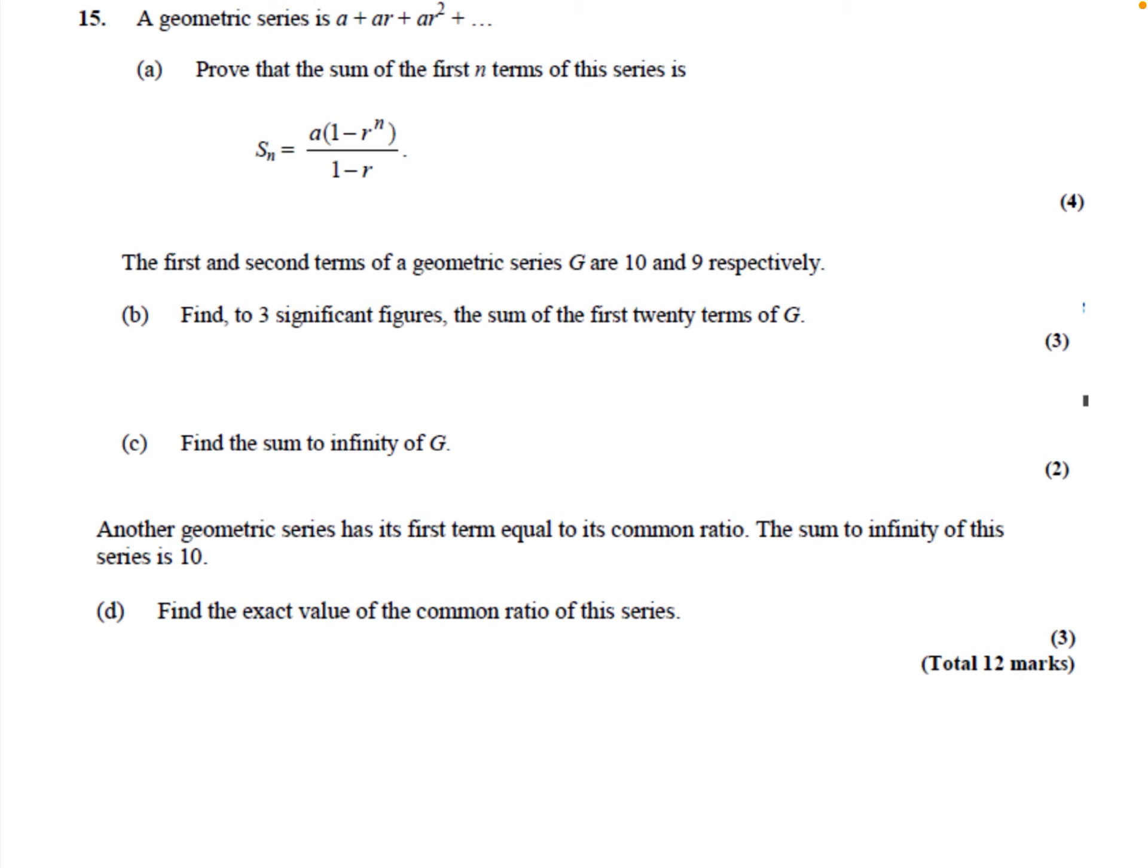The geometric series is A plus AR plus AR squared and so on. We need to prove that the sum of the first n terms of this series is S_n equals A times (1 minus R to the power n) divided by (1 minus R).